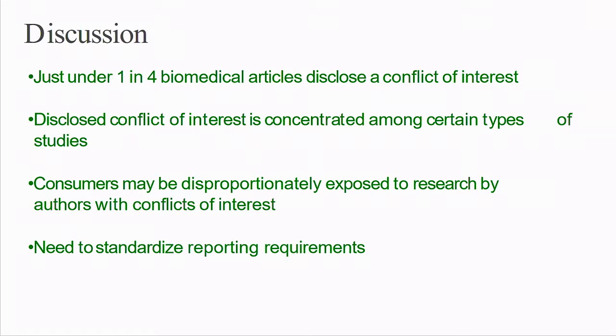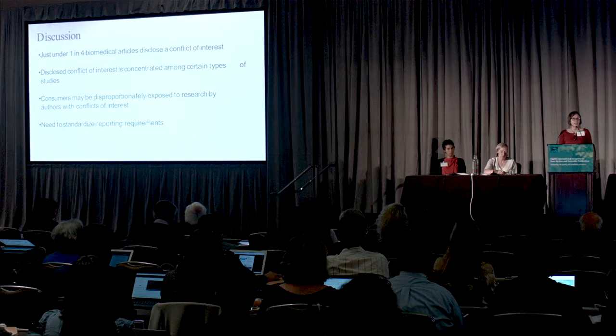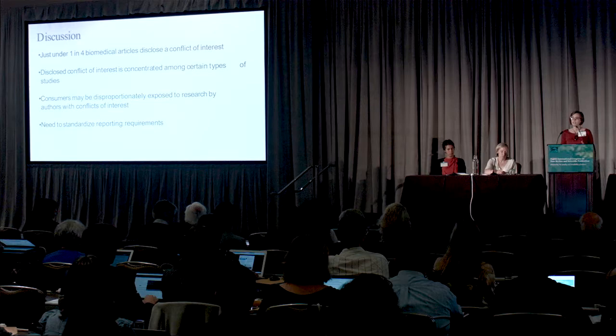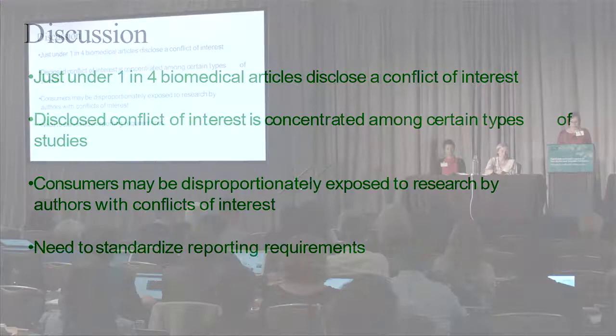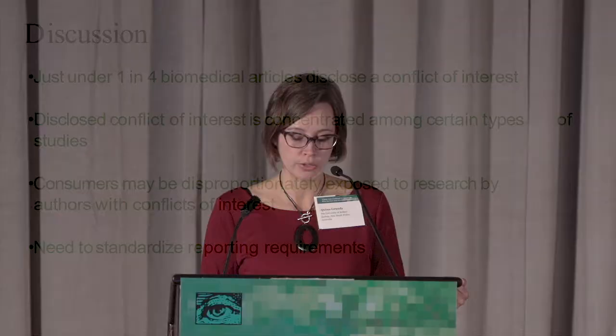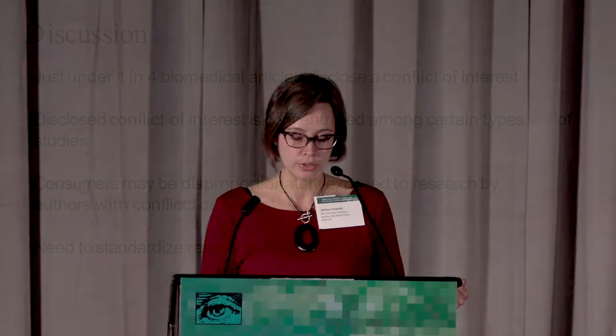This work also suggests the need to revisit reporting requirements, such as separating funding and conflict of interest disclosures so we can understand their independent contribution to bias in research, standardizing reporting requirements across journals, and perhaps revisiting the idea of a registry where we have author-specific rather than article-specific disclosures, much like the Open Payments Database for United States physicians.